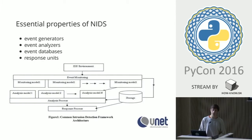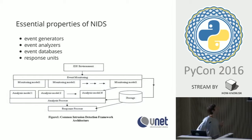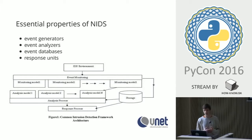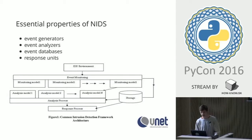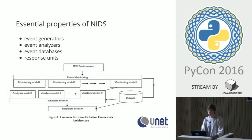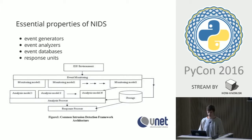The common intrusion detection framework architecture describes an intrusion detection system with four components: event generators, which are the factual reporters of your environment; event analyzers, which analyze those facts and try to detect intrusions and malicious activity; event databases, which are just storage; and response units, which notify responsible people or create automatic actions for mitigation of intrusions and malicious activity.